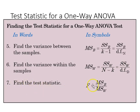We find the test statistic by taking the first value, MSB, and dividing it by the second value, MSW.